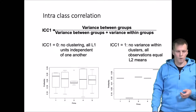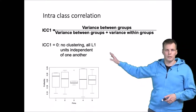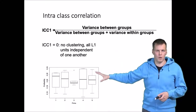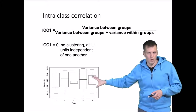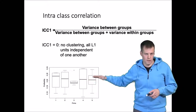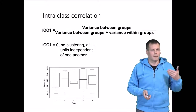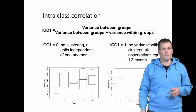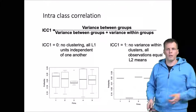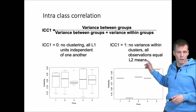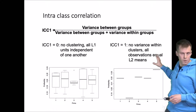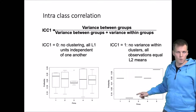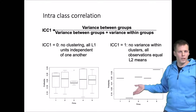When ICC1 is 0, there is no variance between groups — the box plots are all at the same level, means and medians are close, and all variation is within groups. When ICC1 is 1, there is no variance within clusters at all — all observations equal their level-2 group mean, so one firm's profitability is always here, another's is always there, with no within-unit variation.